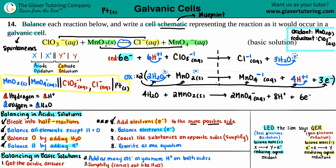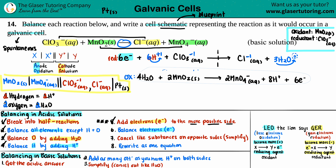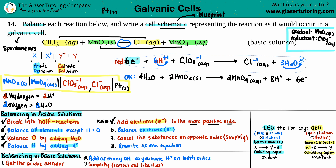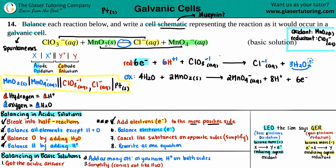Step six is done — we now have a new oxidation equation with 6e⁻ matching the reduction equation's 6e⁻. Step seven: cancel out like substances on opposite sides to simplify. The electrons cancel completely since both sides now have 6e⁻. Also, the chlorine half-reaction has 3H₂O on the right and the oxidation has 4H₂O on the left.